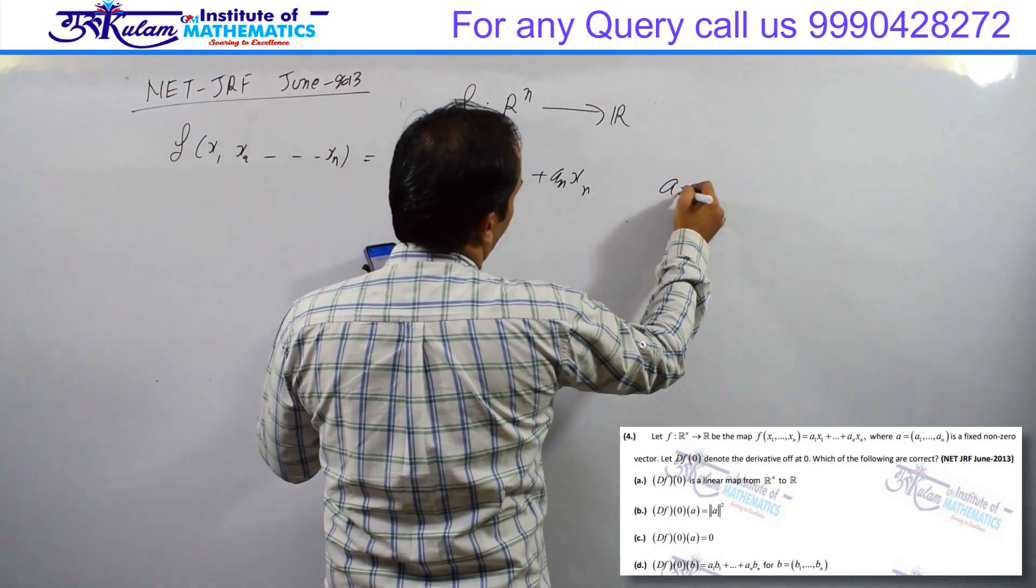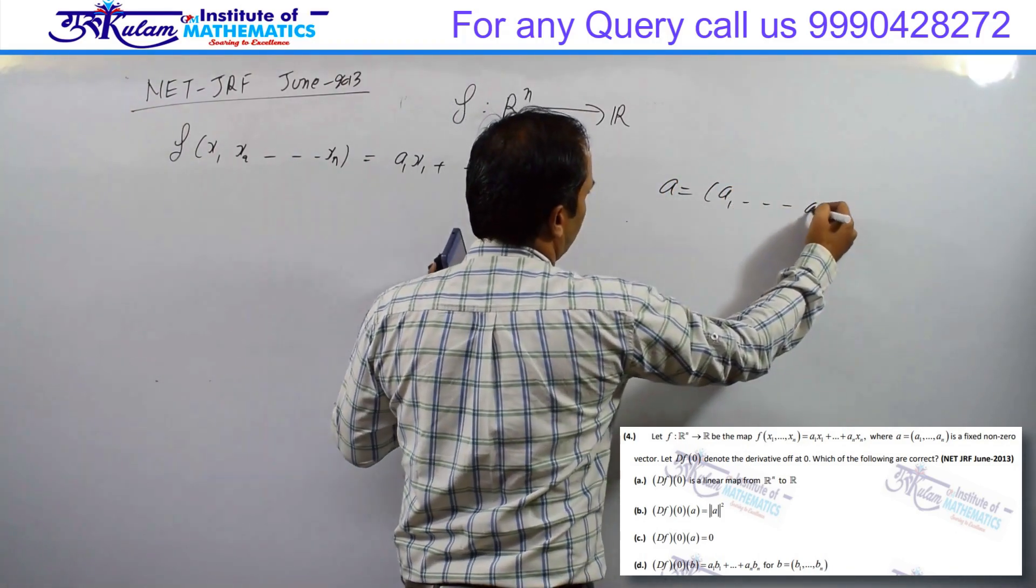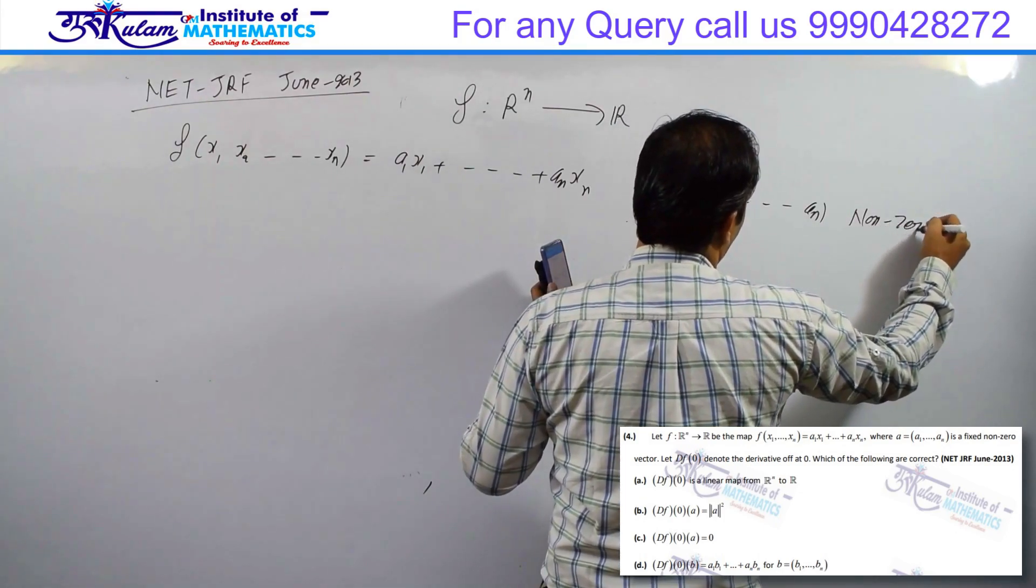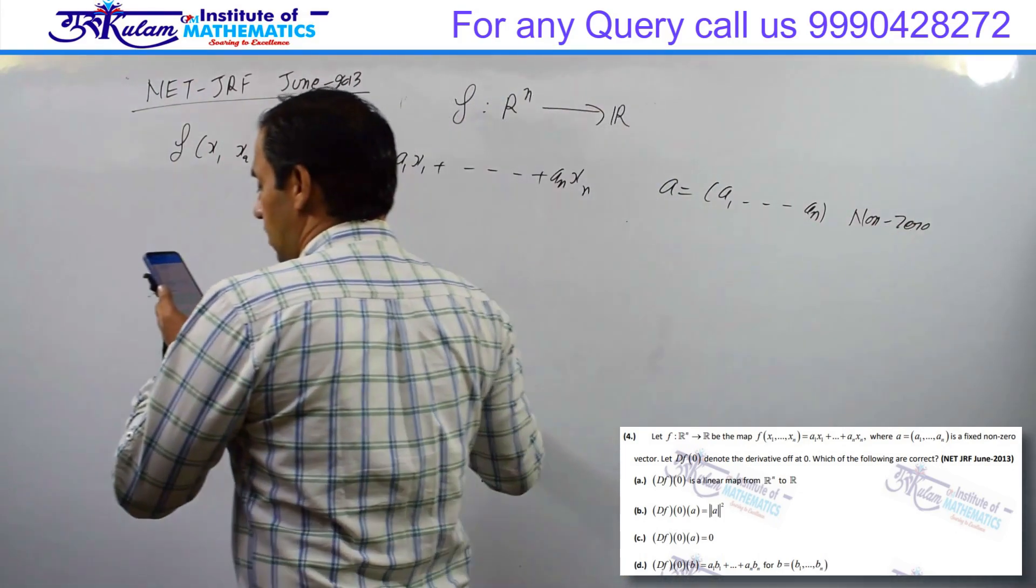Here the given a, which is a1, a2, ..., an, is a non-zero vector, meaning at least one ai is non-zero.